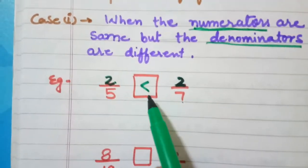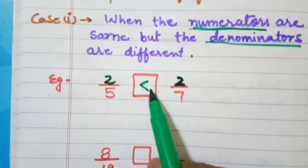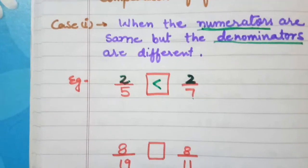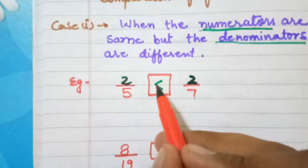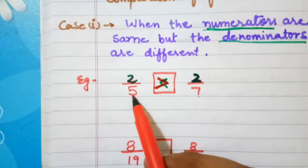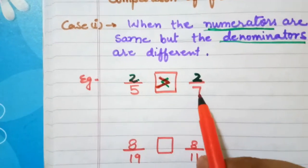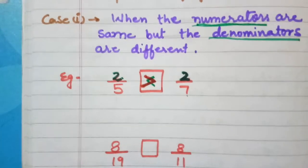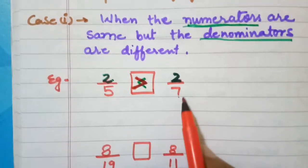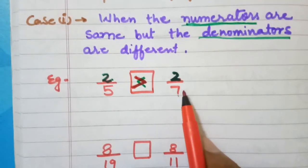Sorry, 2 upon 7 is less than 2 upon 5. So we use this sign: 2 upon 5 is greater than 2 upon 7, because according to the definition, the fraction with the greater denominator is the smaller fraction.